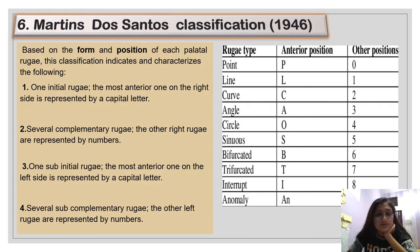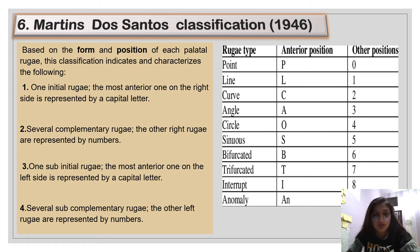The sixth classification is Martin's classification in 1946, based on the form and position of each palatal rugae. It indicates four categories: first, the initial rugae — the most anterior one on the right side — represented by a capital letter (P, E, L, C, A, O, S, B, T, I, N). Second, several complementary rugae — the other right side rugae — represented by numbers 0 to 9. Third, sub-initial rugae — the most anterior on the left side — also represented by capital letters. Fourth, several sub-initial rugae — the other left side rugae — represented by numbers.